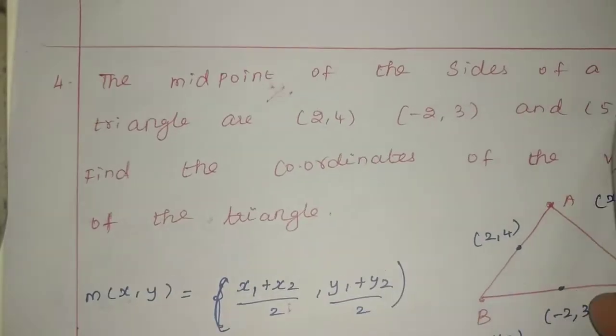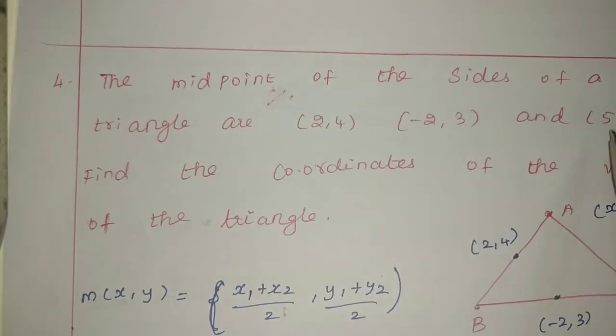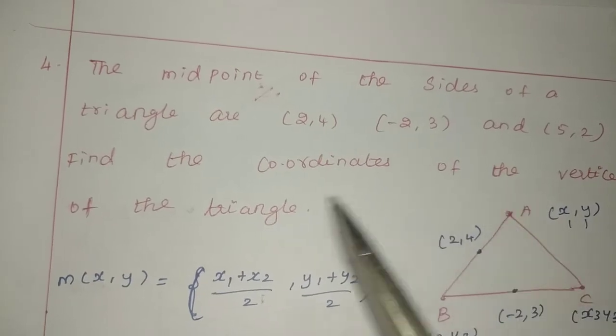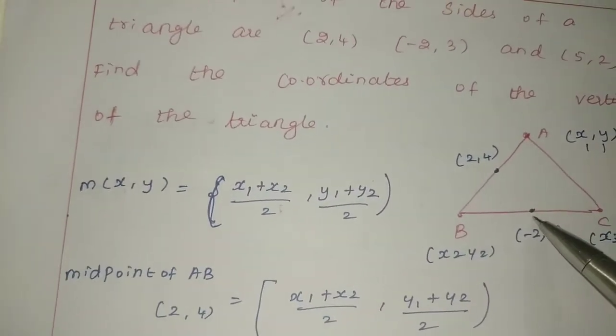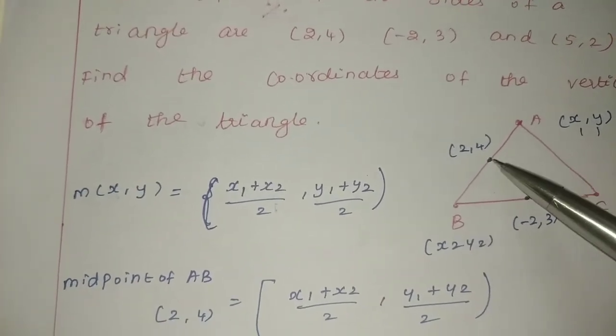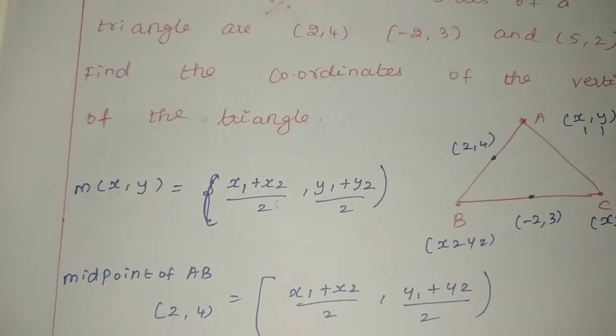The midpoint of the sides of a triangle are (2,4), (-2,3), and (5,2). Find the coordinates of the vertices of the triangle.